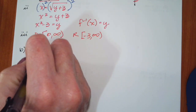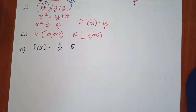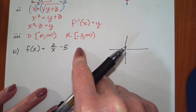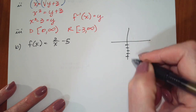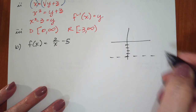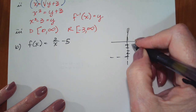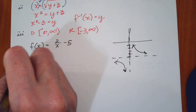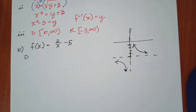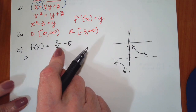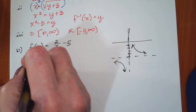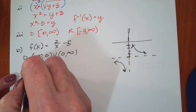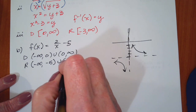Part b is f of x equal to 2 over x minus 5. This is the rational function shifted down 5 units, so my horizontal asymptote has been moved down to negative 5, and my vertical asymptote is still at x equals 0. My domain goes from negative infinity to 0, and then from 0 on to infinity. The range is everything except the asymptote at negative 5, so it's negative infinity to negative 5, and then negative 5 to infinity.